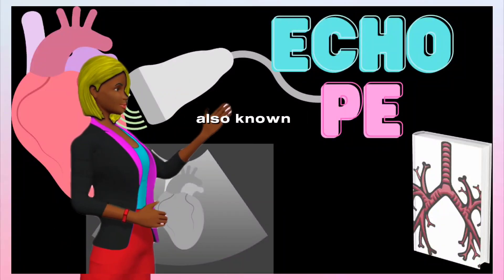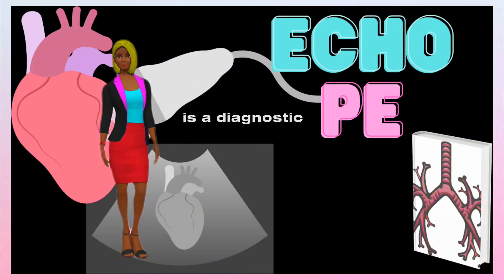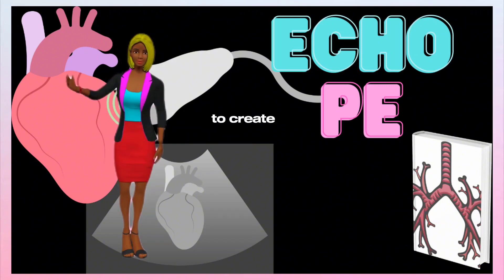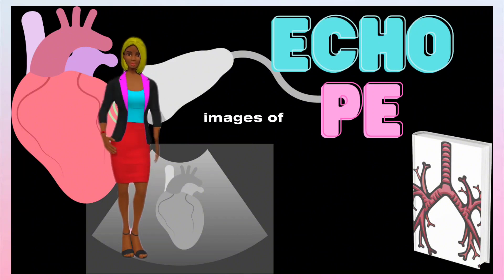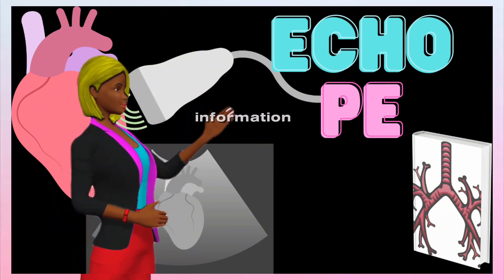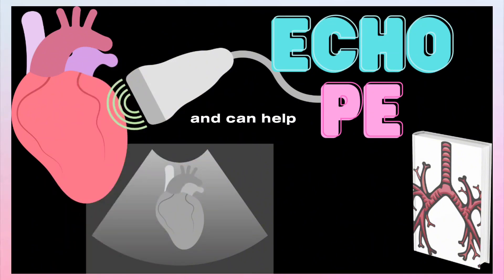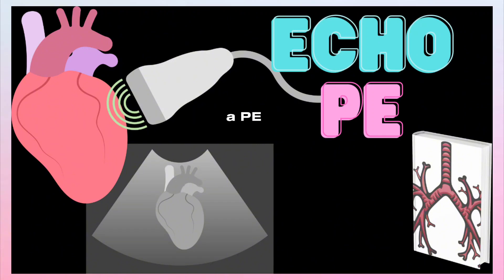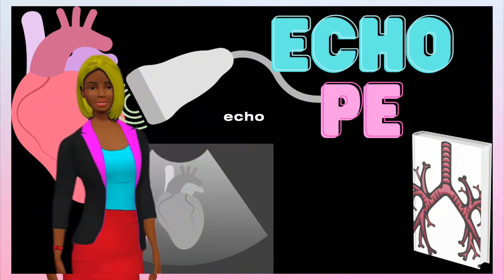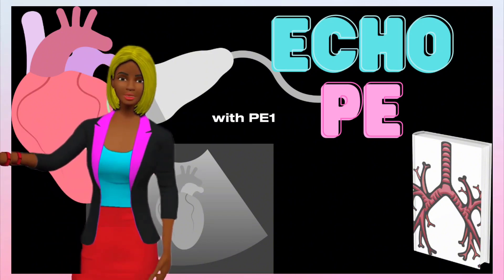Echocardiography, also known as an echo, is a diagnostic test that uses sound waves to create images of the heart. It provides valuable information about the structure and function of the heart and can help detect abnormalities associated with pulmonary embolism (PE). Here are some echo findings that may be seen in patients with PE.